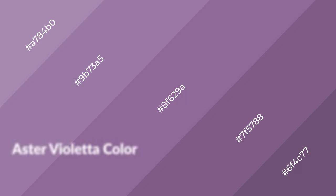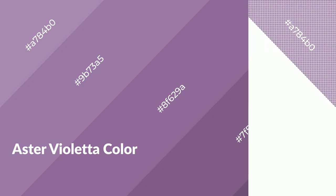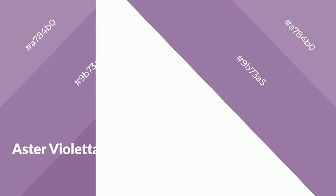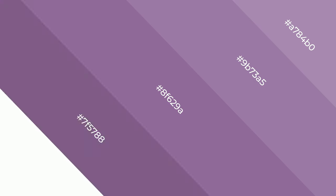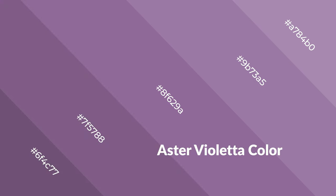Aster Violetta is a warm color and it emits cozier and active emotions. Warm colors are symbols of warmth, fire, heat, and sunshine. It also evokes joy, passion, love, and even anger. You can see warm colors used in restaurants and gyms.